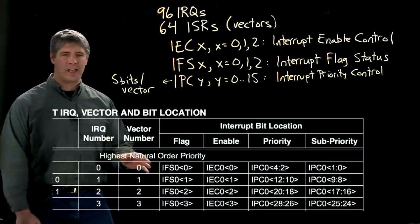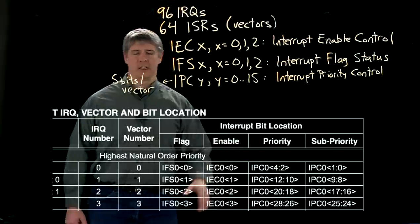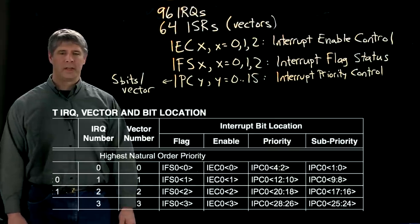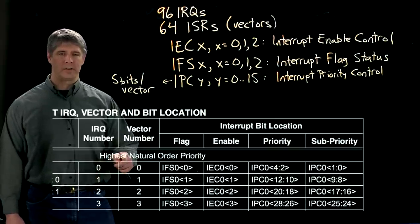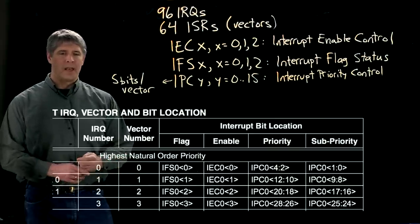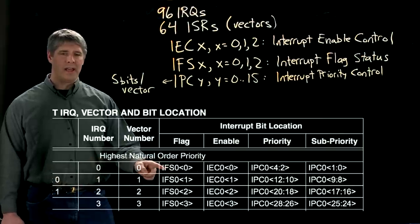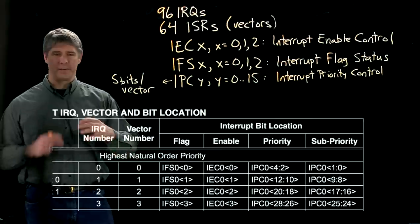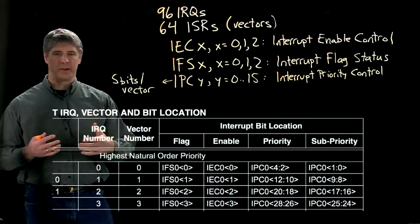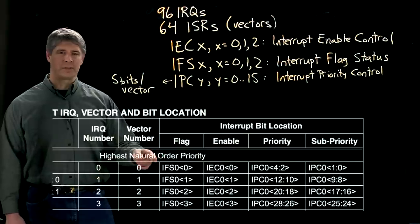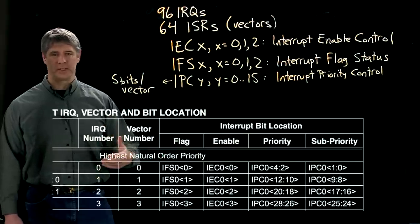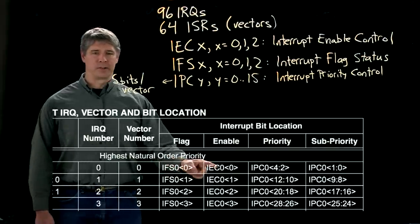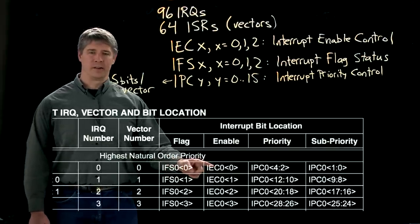Here's that table again, but now with some more information. We've cut off the source here, but this is core timer interrupt, which again has IRQ number zero, vector number zero. And then it's got one bit in the IFS zero special function register. Because it's the zeroth interrupt source, it's the first bit of the first register. The first register is IFS zero. So the zeroth bit of that register, also the zeroth bit of the IEC zero register.